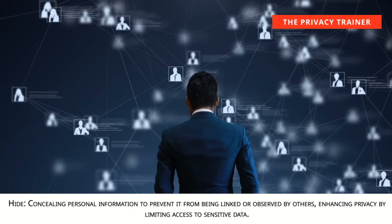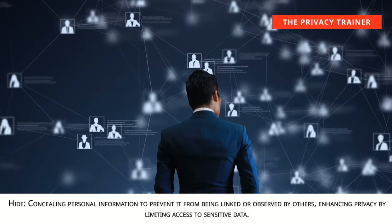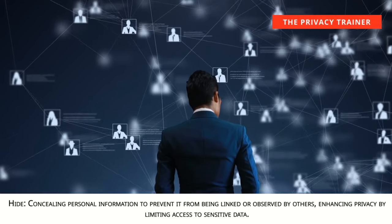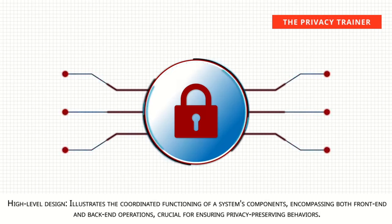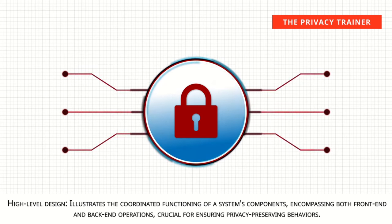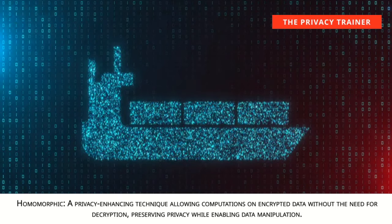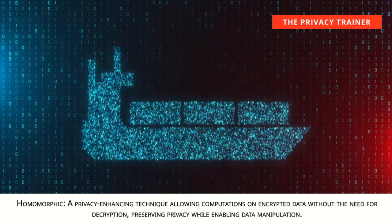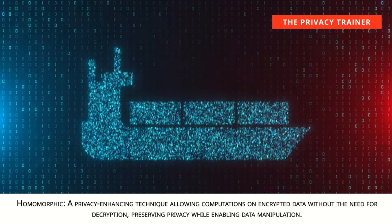Hiding. Concealing personal information to prevent it from being linked or observed by others, enhancing privacy by limiting access to sensitive data. High-level design. Illustrates the coordinated functioning of a system's components, encompassing both front-end and back-end operations, crucial for ensuring privacy-preserving behaviours. Homomorphic. A privacy-enhancing technique allowing computations on encrypted data without the need for decryption, preserving privacy while enabling data manipulation.